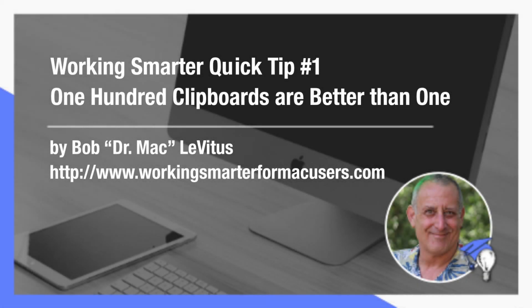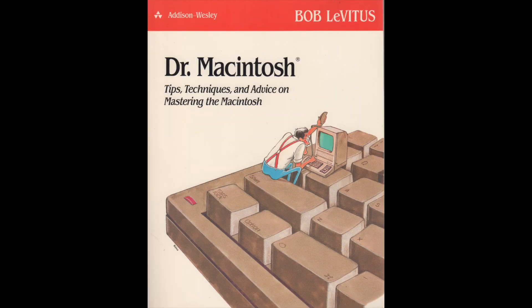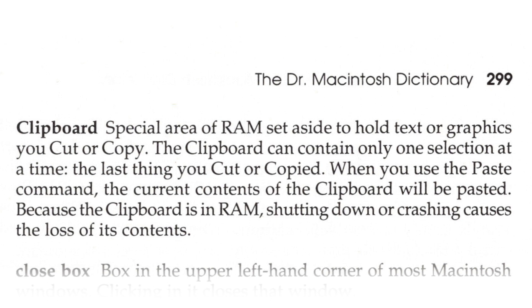I'm Bob Dr. Mac Levitas and this is Working Smarter Quick Tips. In my very first book, Dr. Macintosh, way back in 1989, I described the Mac clipboard like this: the clipboard is a special area of RAM set aside to hold text or graphics you cut or copy. The clipboard can contain only one selection at a time. When you use the paste command, the current contents of the clipboard will be pasted. Because the clipboard is held in RAM, shutting down, restarting, or crashing causes the loss of its contents.